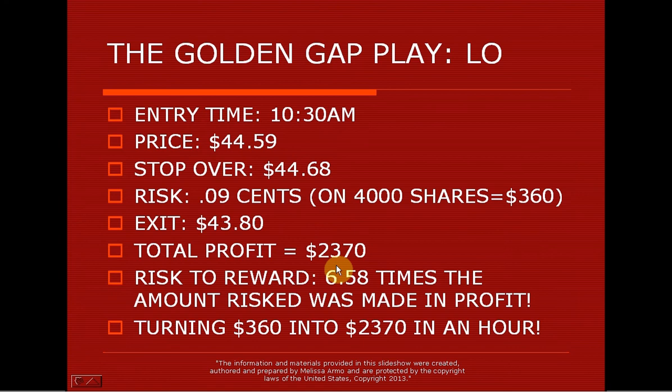The entry time was 10:30, and again, this is a late play. Gaps happen any time in the morning between 9:30, 10 o'clock, 10:15, 10:30 — this is when you're in them, and you're in them and out by lunchtime. Price was $44.59, stop over $44.68 — that's a nine-cent risk. One of the advantages of trading gaps is you get a great risk-to-reward. If you risk $360 on this play and exit into the tail, total profit was $23.70 — that's $2,370 you could have made, risking $360.